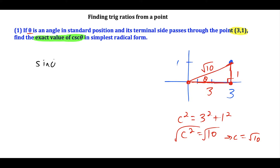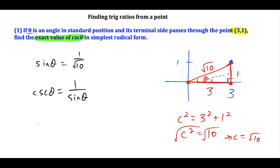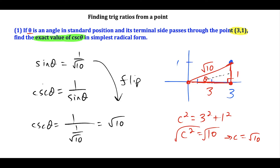We'll find sine theta first, because cosecant theta equals 1 over sine theta — it's the reciprocal of sine. Sine is the ratio of the side opposite theta, which is 1, over the hypotenuse, which is square root of 10. So cosecant theta equals 1 over (1 over square root 10), which simplifies to square root of 10. All you do is flip the fraction since sine and cosecant are reciprocals. This is our solution to the first question.